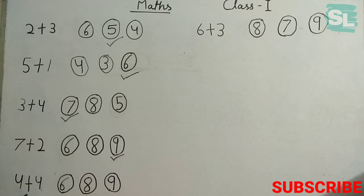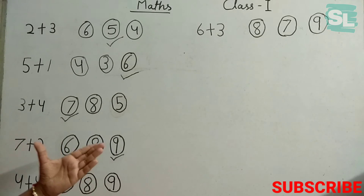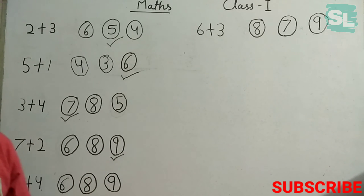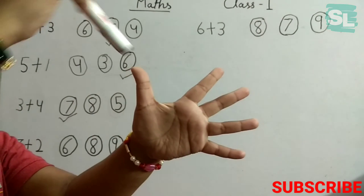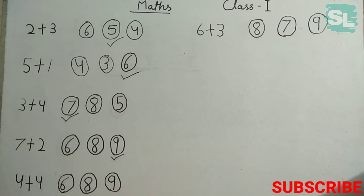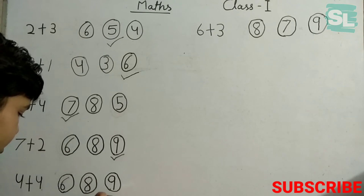Next is 4 plus 4. Let's count it. We have 4 plants, and someone gave us 4 more plants. We have 4 plus 4 — let's count them: 4, 5, 6, 7, 8. So our answer will be 8. We found 8!